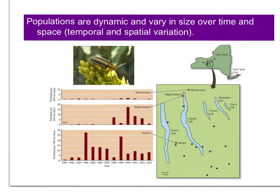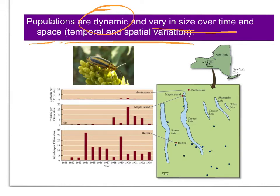Now that we've spent time talking about how we can measure population size, abundance, and distribution, what do we do with this kind of information? One of the things that ecologists have found out from doing this kind of sampling is that populations are very dynamic. They vary in both size over time and in space — temporal and spatial variation — population size can go up and down over time, and it can be different from one area to the next.